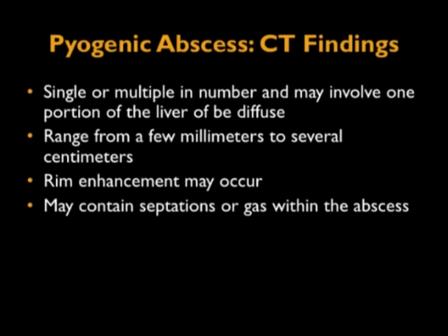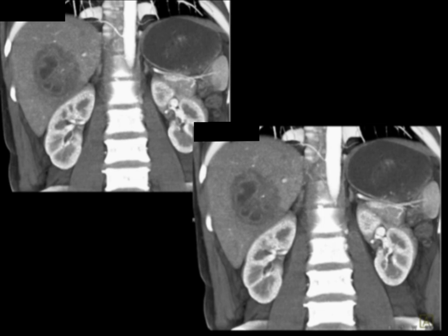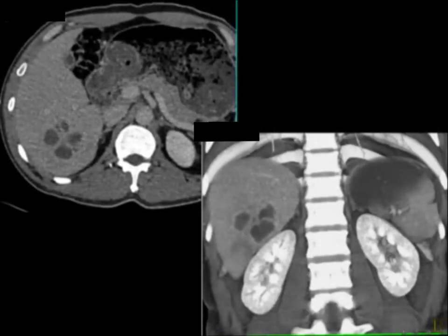Pyogenic abscesses can be single or multiple, may involve one or multiple portions of the liver, range from a few millimeters to a few centimeters, and rim enhancement may occur. Here's a cystic low-density lesion — could this be an amoebic abscess? In fact, that's what it was. Right lobe of the liver — you've got to be thinking amoebic, though it could be E. coli or bacterial. You can see a pseudocapsule, and inside are what look like satellite lesions. When you see a cluster of things, be thinking about the possibility of abscess — including hydatid disease, which often has a pseudocapsule.